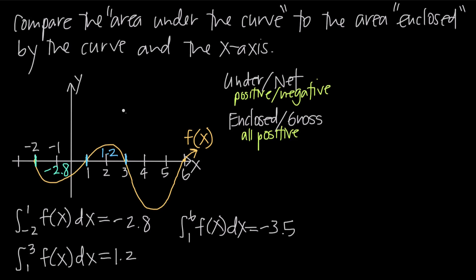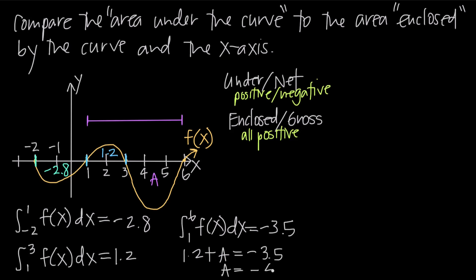The interval from 1 to 6 covers this entire section. We already know it includes the positive area of 1.2 from 1 to 3. If we call the area from 3 to 6 just A, then taking the integral from 1 to 6 gives the net area on the whole interval, treating the area between 1 and 3 as positive and area A between 3 and 6 as negative. So: 1.2 + A = -3.5. Solving for A by subtracting 1.2 from both sides gives A = -4.7.